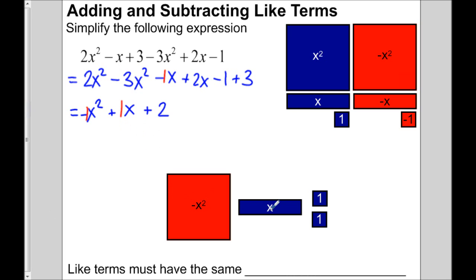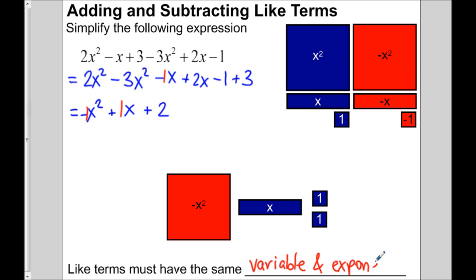The x and the x squared — just because they have the same letter doesn't mean they're like terms. This is x squared and this is x. Like terms must have the same variable, but they also have to have the same exponent. So it's like x and x squared are cousins, but they're not alike. That's very important.